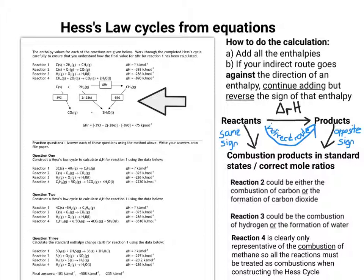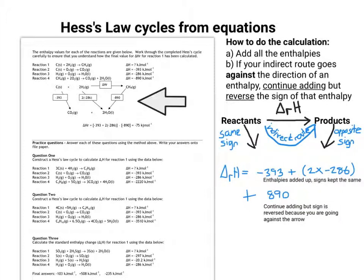But on the other side, as you go towards the products, you're going against the direction of the arrow. So that is the opposite sign. So my final value can be obtained by adding all the enthalpies on the left-hand side, on the reactant side, keeping the sign the same because my indirect route goes in the same direction as all of my enthalpies. But then on the product side, the indirect route now goes against the direction of the arrow. So now I continue adding it up, the sign is reversed. So if you put that into your calculator, that'll give you minus 75 kJ per mole, just like it says on the sheet.